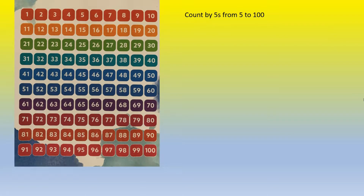Now we're going to count by 5s from 5 to 100. You'll notice that all the numbers come from the column that ends in 5 or the column that ends in 0. Let's go.